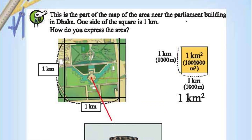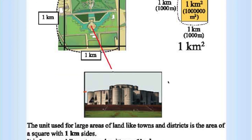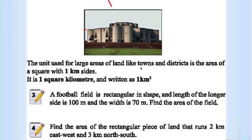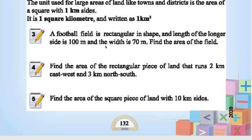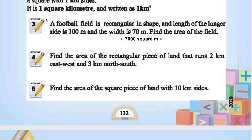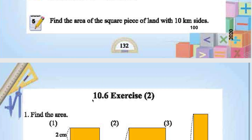Here is part of a map near the parliament building in Dhaka. One side of the square is 1 km; area = 1 km × 1 km = 1 km². This unit is used for larger areas of land like towns and districts. A robot field is rectangular: the longer side is 100 m and width is 70 m, so area = 7000 m². A rectangle of land running 2 km East-West and 3 km North-South has area = 6 km². We will continue with this exercise in the next session.